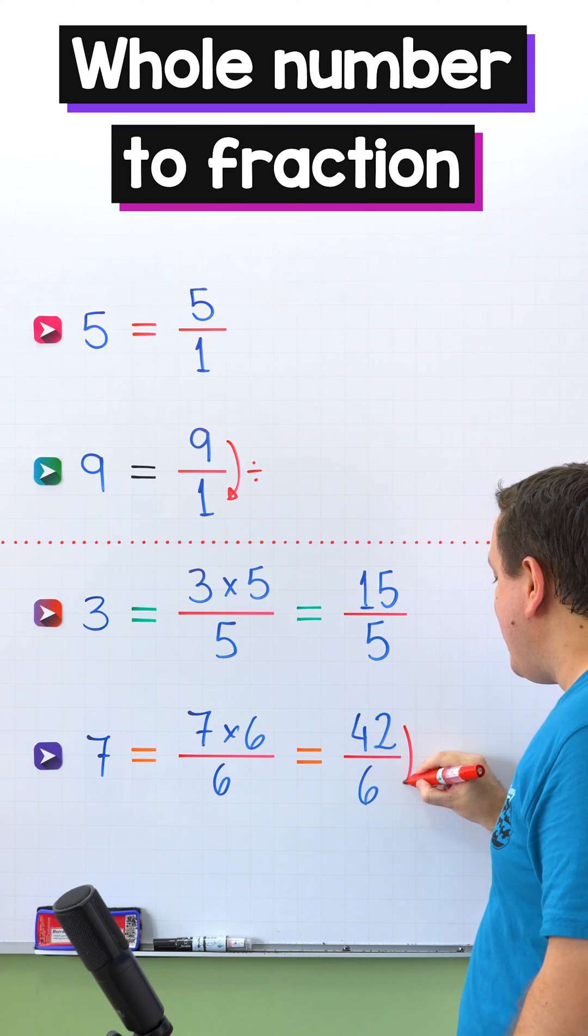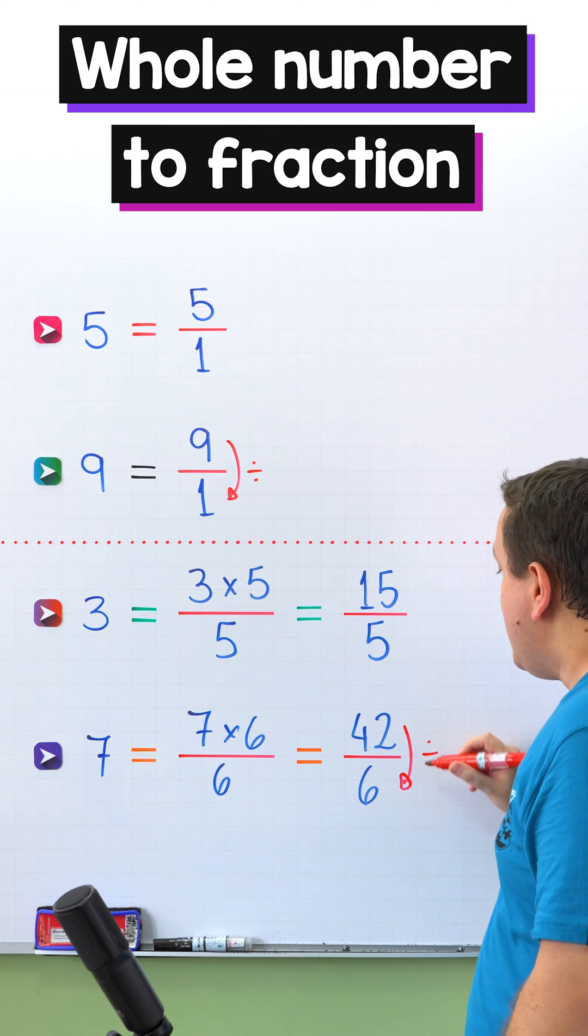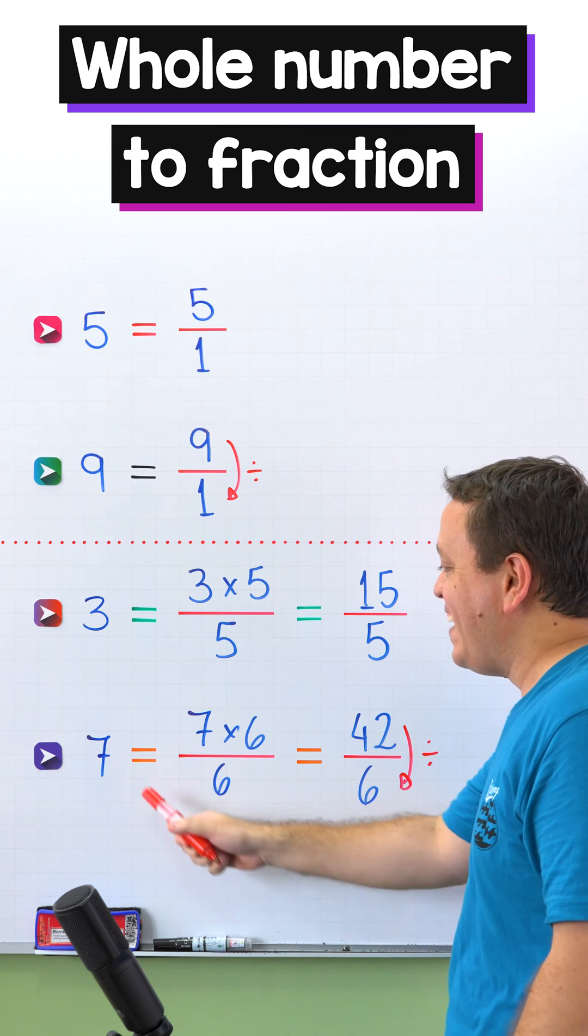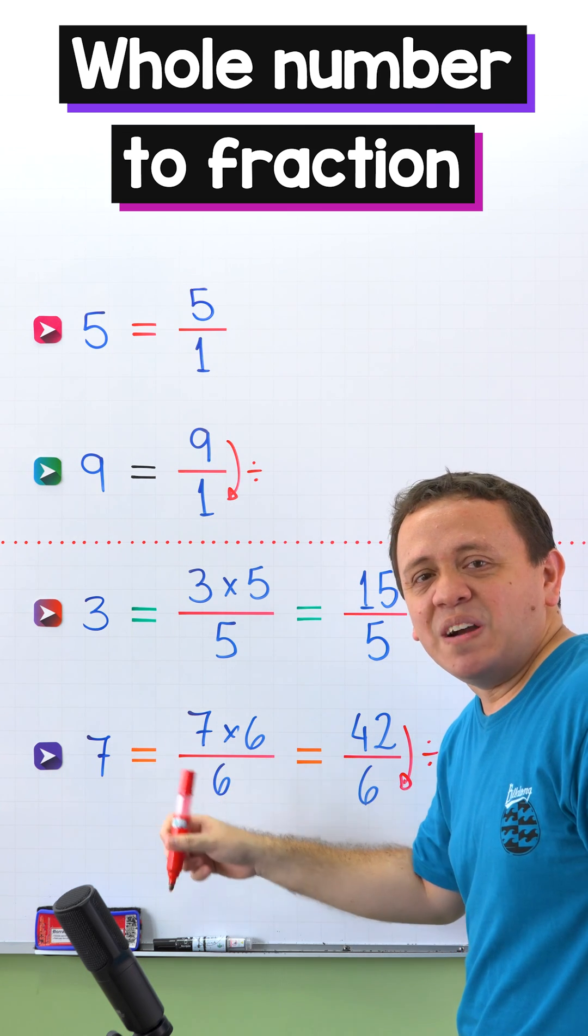To check the answer, just remember that we can also see a fraction as a division, and 42 divided by 6 equals 7, our original number.